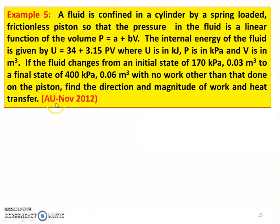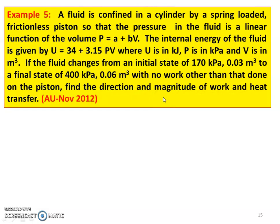Example number 5. This is from the November 2012 question paper. A fluid is confined in a cylinder by a spring-loaded frictionless piston, so that the pressure in the fluid is a linear function of volume: P equal to A plus BV, where A and B are constants and V is the volume. The internal energy of the fluid is given by U equal to 34 plus 3.15 into PV, where U is in kilojoules, P is in kilopascal, and volume V is in meter cube. If the fluid changes from initial state (170 kPa, 0.03 m³) to final state (400 kPa, 0.06 m³), with no work other than that done on the piston, find the direction and magnitude of work and heat transfer.